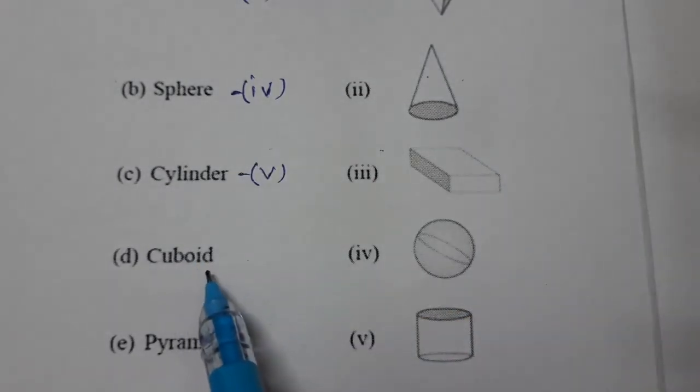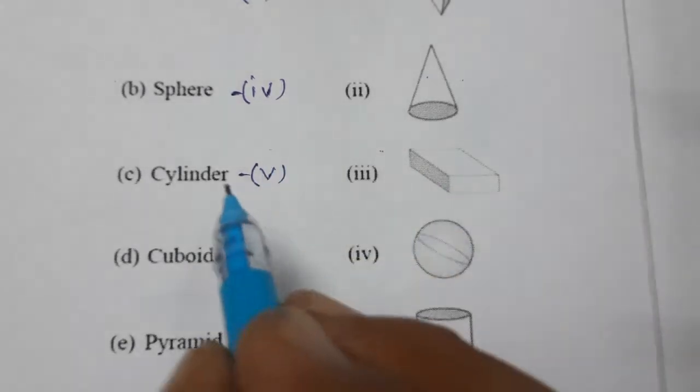Next one is cuboid. Cuboid is this matchbox, so cuboid is third.